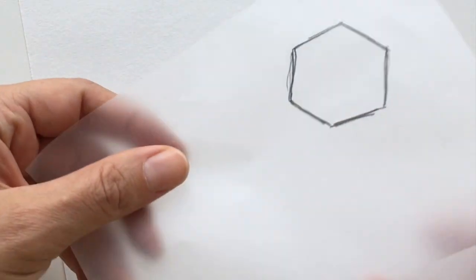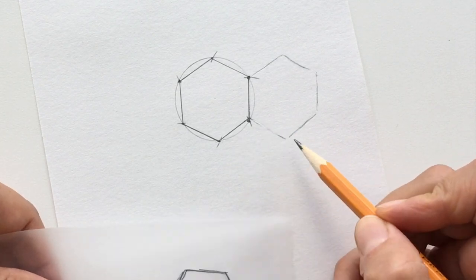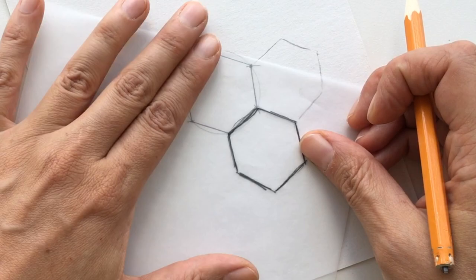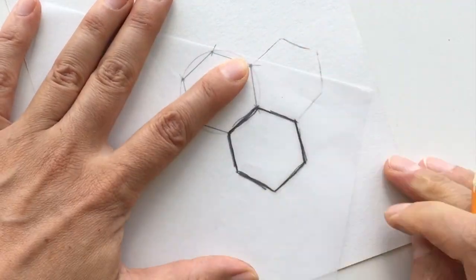Repeat this process, making sure that there are no spaces between your hexagons. This is called tessellation.